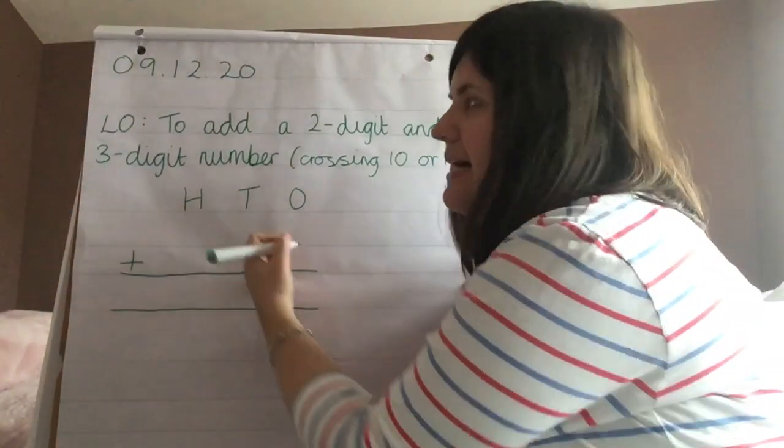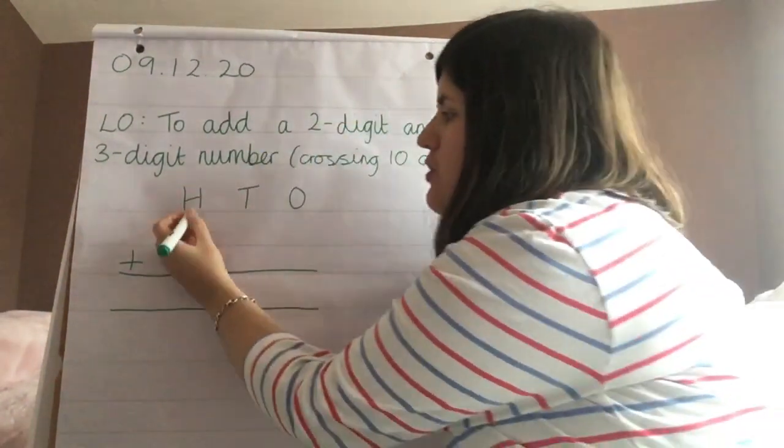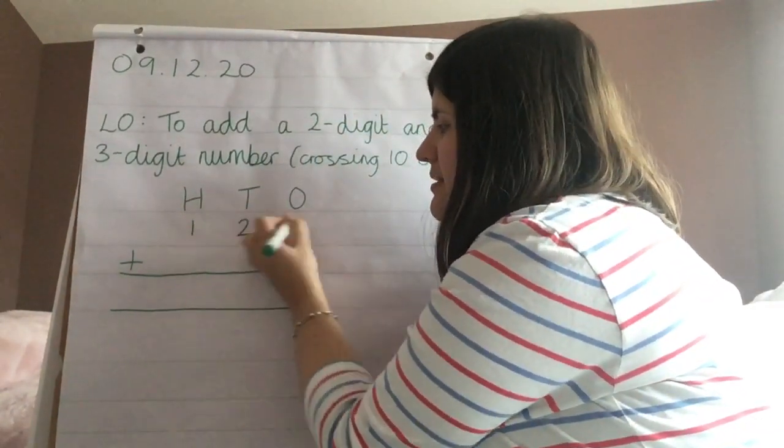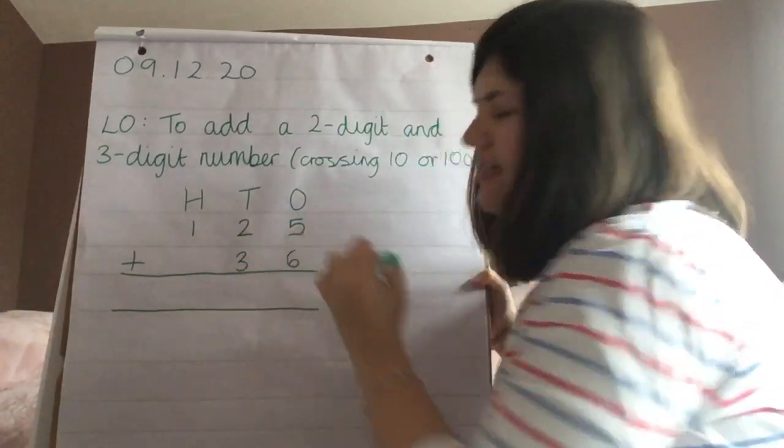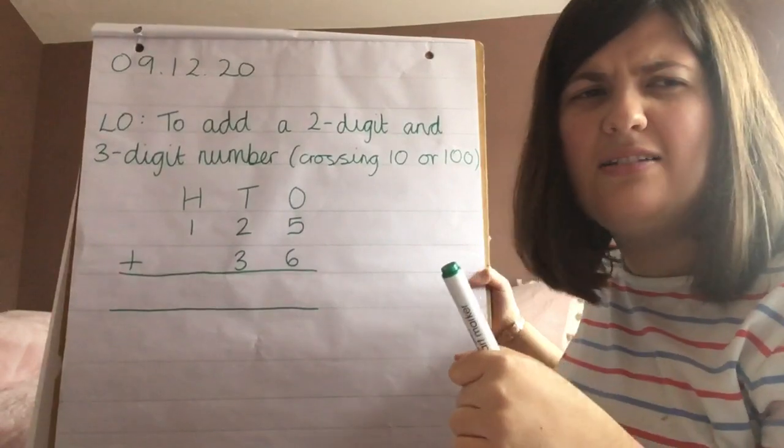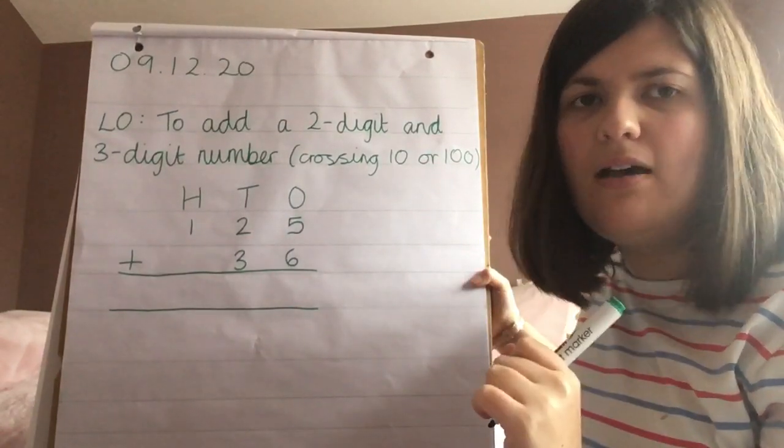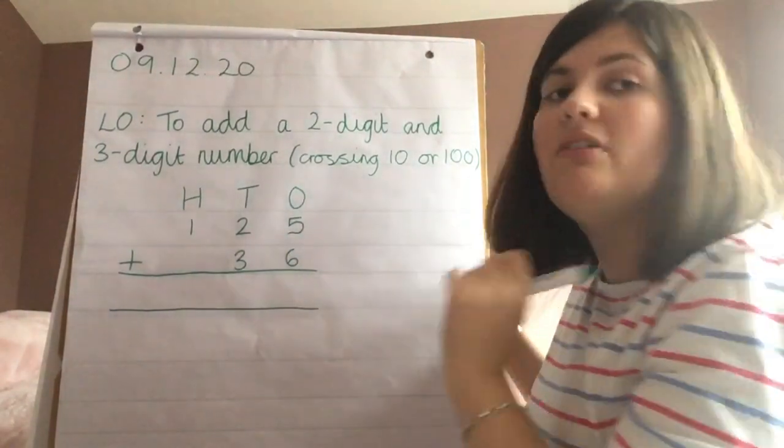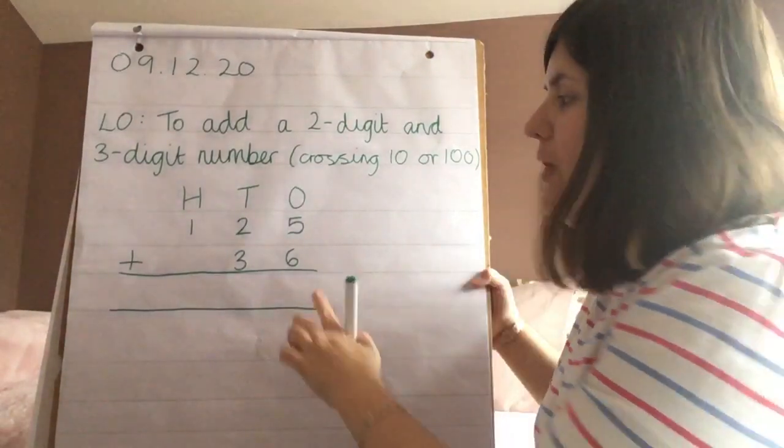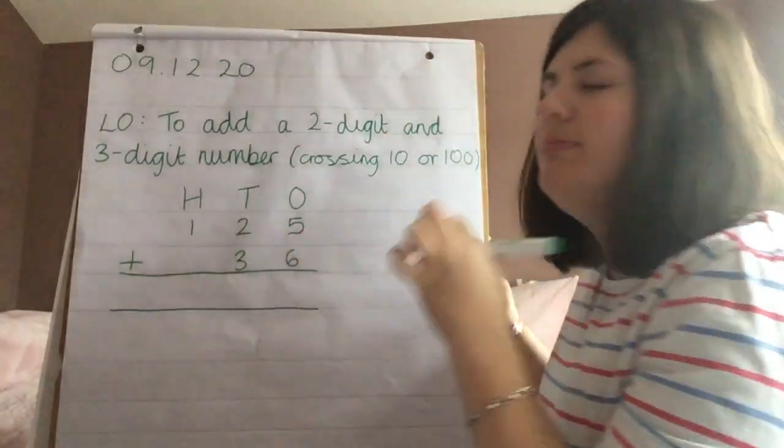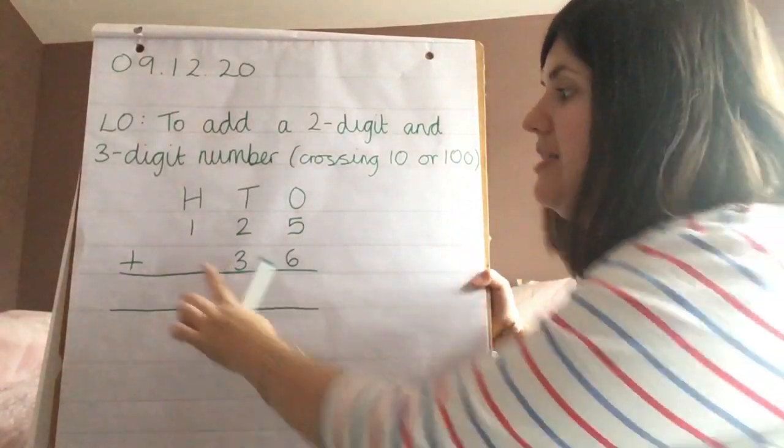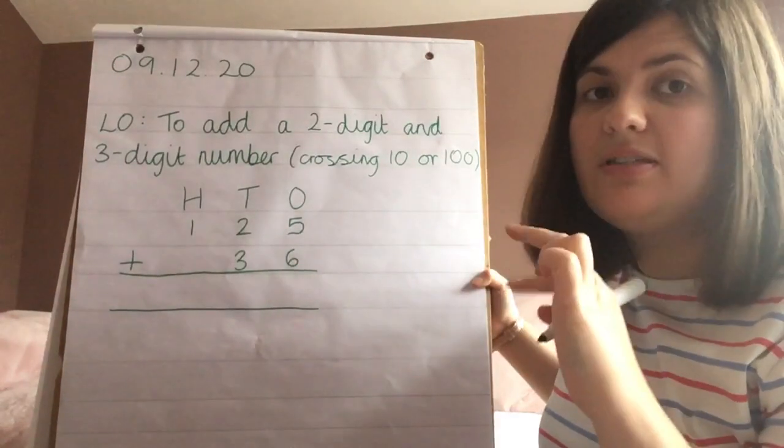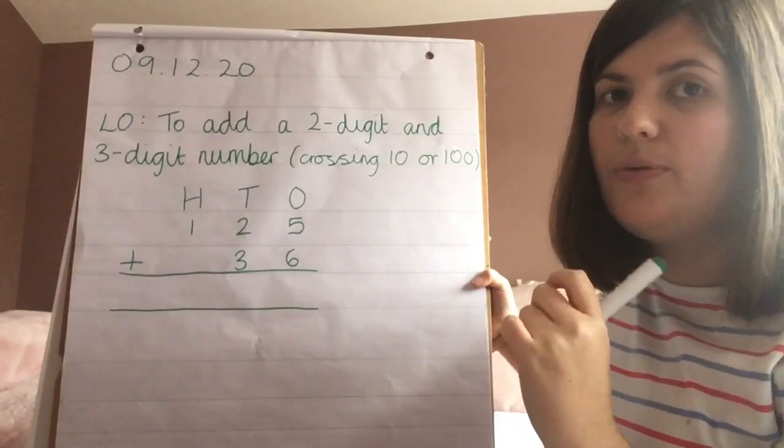So for example, let's have 125 and 36. First things first, does it matter which way around I write those numbers, as in whether it should go on the top line or the bottom line? No it doesn't, because remember we said addition is commutative, so those numbers can go around either way that we'd like.